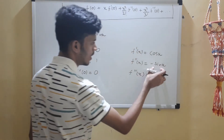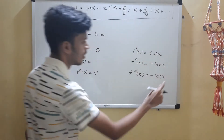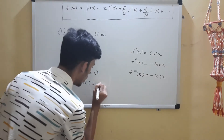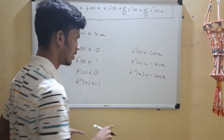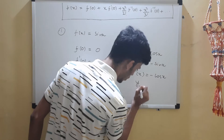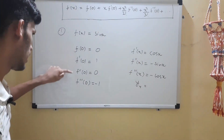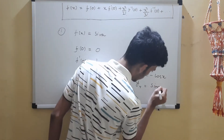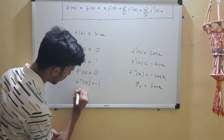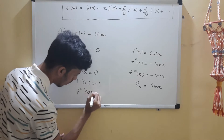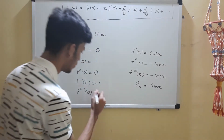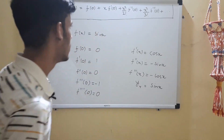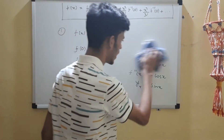Continuing: f'''(x) equals minus cos x, so f'''(0) equals minus 1. For the fourth derivative, differentiating minus cos x gives sine x, and f''''(0) equals sine 0 equals 0. The pattern is now clear: 0, 1, 0, -1, 0, 1, 0, -1, repeating. We now plug these values into the Maclaurin formula to get the series for sine x.